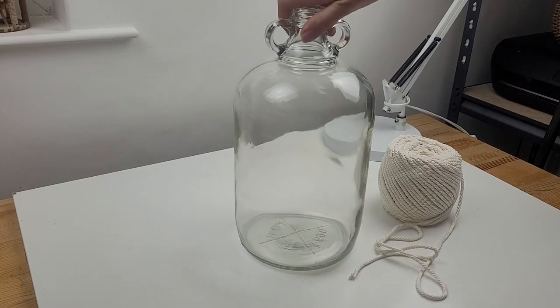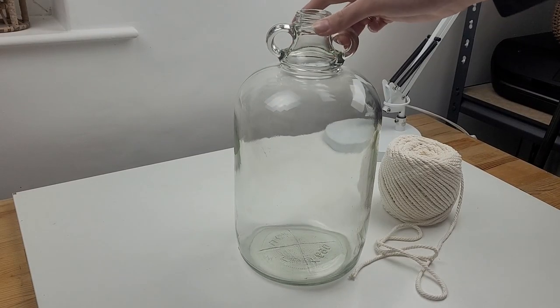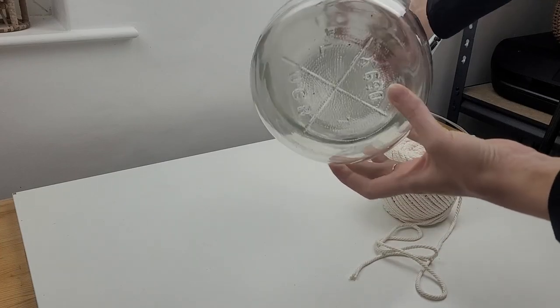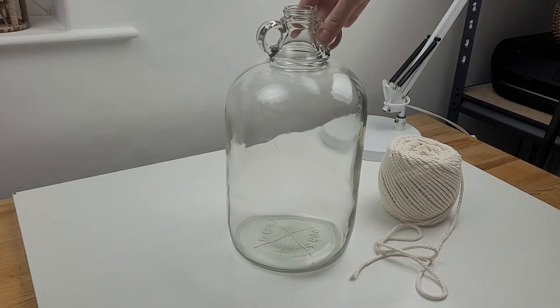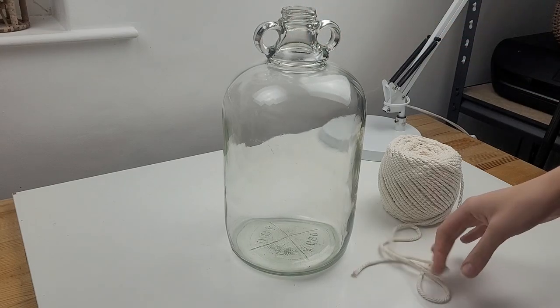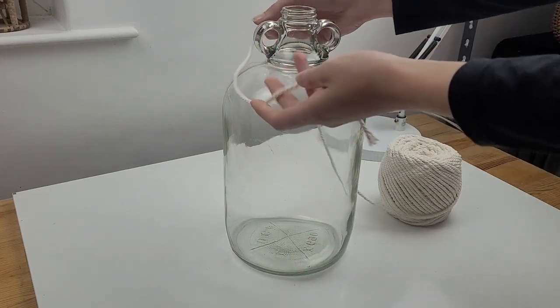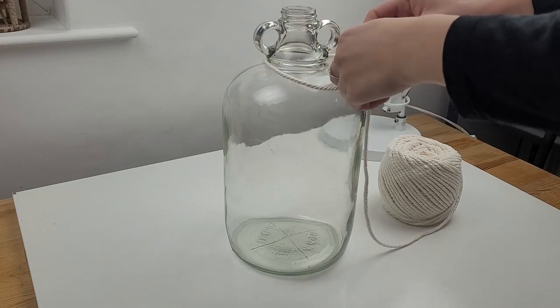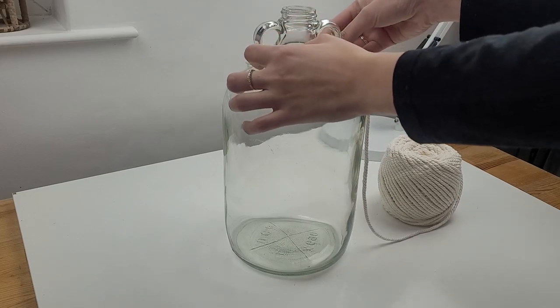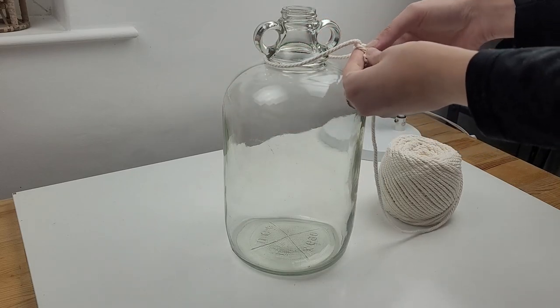This is a glass demijohn. I think that's what it's called. I bought it a while ago on cardboard sales. I really like its shape but I wasn't sure what I can do with it. It's quite heavy and I think it creates very unique decoration. For this project I will be using 6mm thick macrame cord.